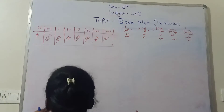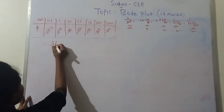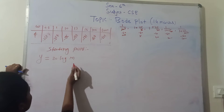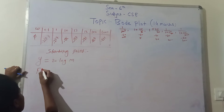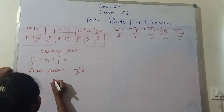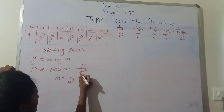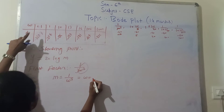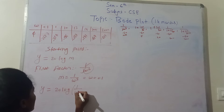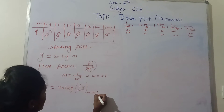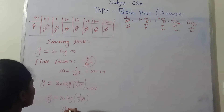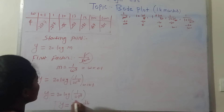Next we find the starting point for the graph. The starting point formula is y = 20 log(M), calculated for the first factor, which is 1/(jω)³. Substituting M = 1/ω³ and ω = 0.1, we get y = 20 log(1/0.1³) = 20 log(1000) = plus 60 dB. So our first starting point is plus 60 dB.